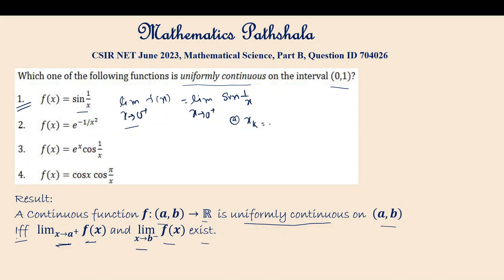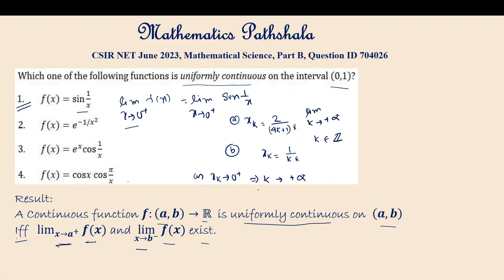One path is x_k = 2 / ((4k+1)π), and another path is x_k = 1 / (kπ), where k is an integer. As x_k tends to 0⁺, k tends to +∞. Along the first path, the limit as k → +∞ of sin(1/x_k) equals sin((4k+1)π/2) = sin(π/2) = 1.